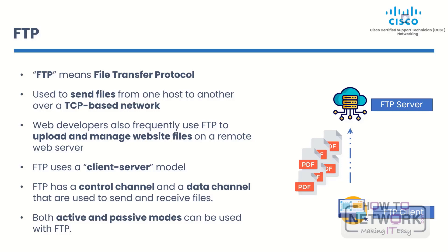The control channel is how the client and server talk to each other, like when the client sends a connect command and the server responds, while the data channel is used to transfer files. Both active and passive modes can be used with FTP. In active mode, the client connects to the server first. In passive mode, the server connects to the client first. When the client is behind a firewall or a NAT device, passive mode is often used because it can help get around firewall restrictions.